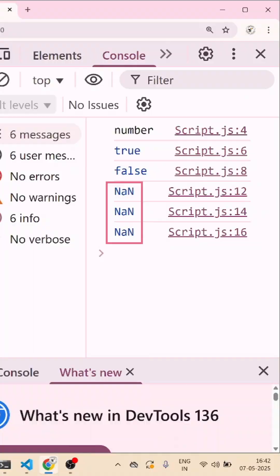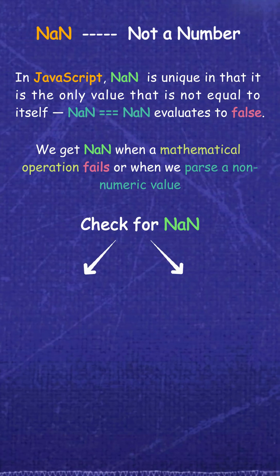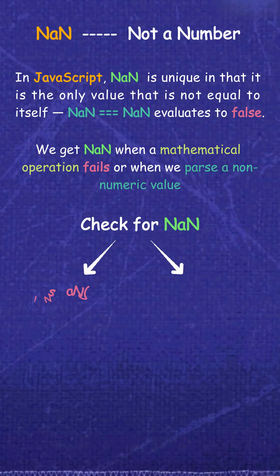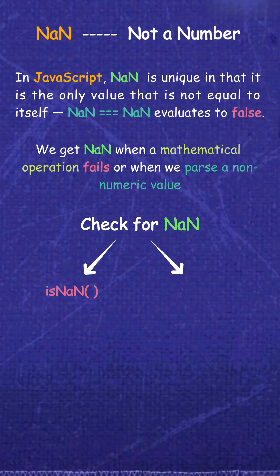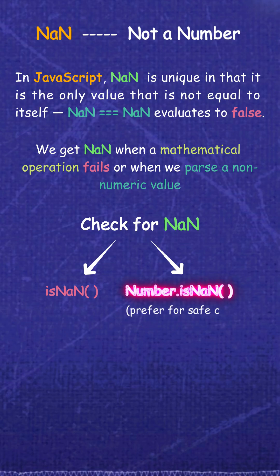How do you check for NaN? Well, there are two ways. First is isNaN, and the second one — rather the better one — is Number.isNaN. The second one should be preferred for a safer check.